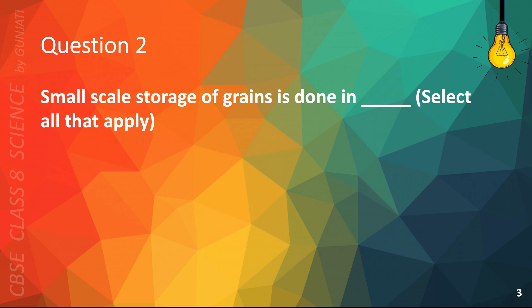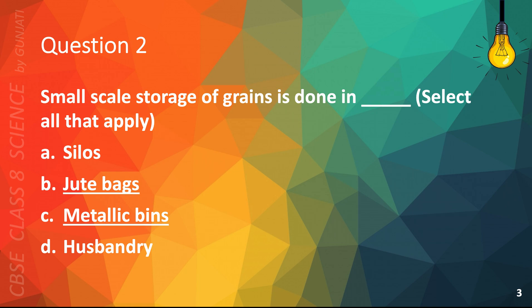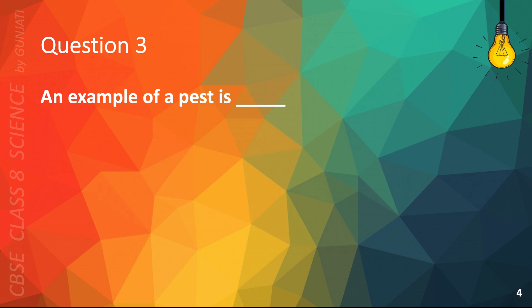Question 2. Small-scale storage of grains is done in... Select all that apply. A. Silos, B. Jute bags, C. Metallic bins, D. Husbandry. The correct answer is B. Jute bags and C. Metallic bins.